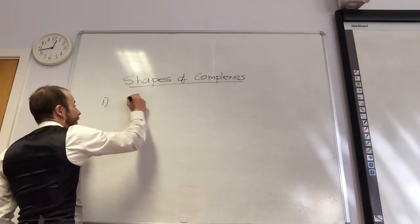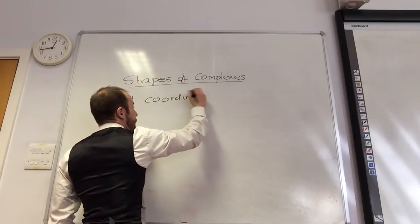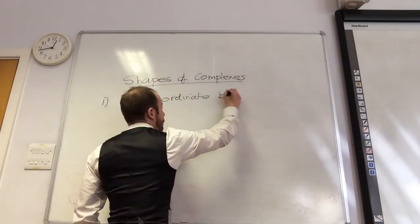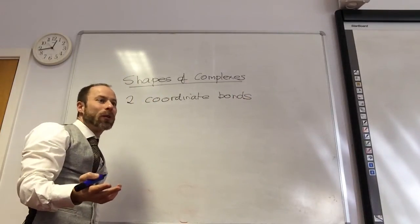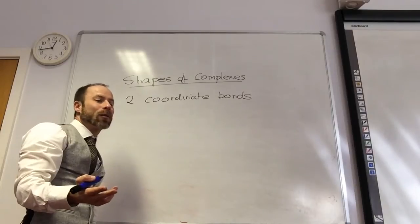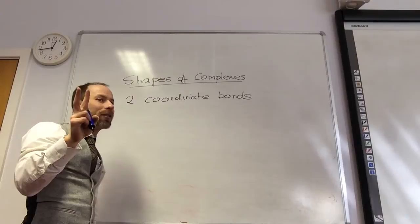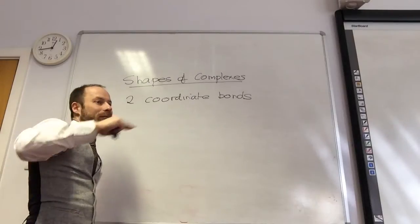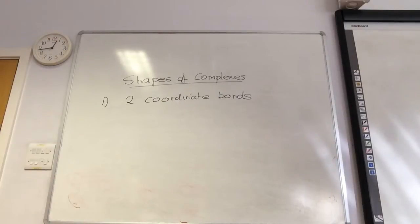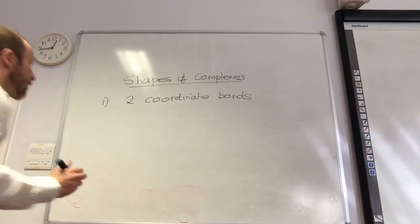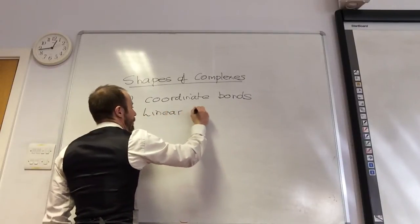First one: if I had two coordinate bonds, what shape is it going to be? What shape would it be in atoms, bonds and groups? Two bonds, don't worry about lone pairs — linear. So it's going to be linear. An example is a silver diamine complex [Ag(NH₃)₂]⁺. Two coordinate bonds gives a linear shape.